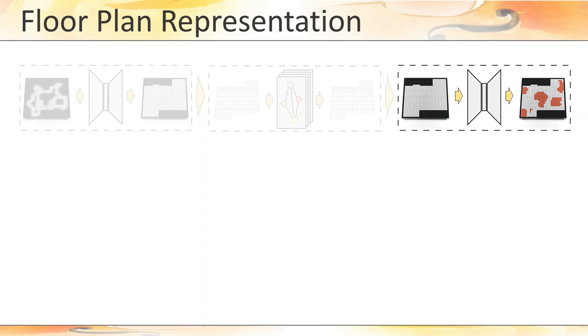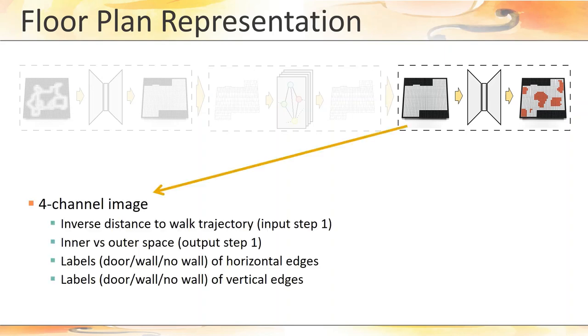The furniture extraction network is also area-oriented and therefore also uses image-based representations as input and output. Differently from the first network, the input is a four-channel image. The first and second channels contain the inverse distance of the walk trajectory and a binary mask encoding the inner and outer space.